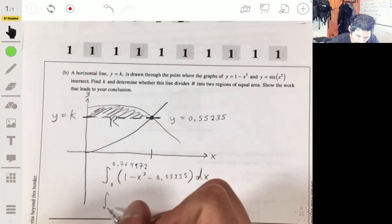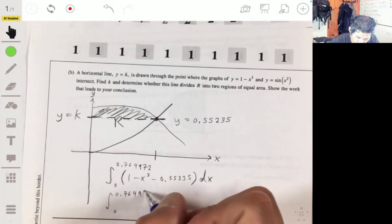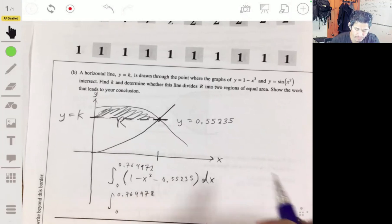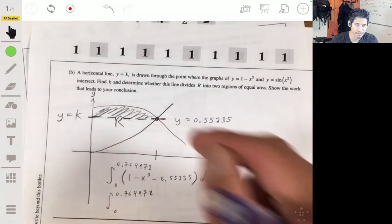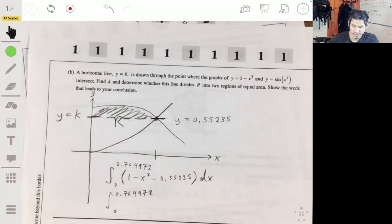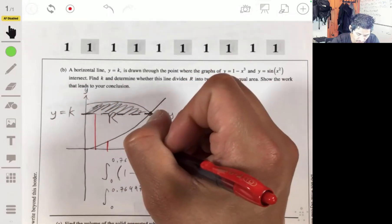And then the other one will be from, again, from 0 to that point as well, 0.764972. Except it's going to be this line minus the sine of x squared line. So this is, in this case, this is the farther one. And this is the sine of x squared.